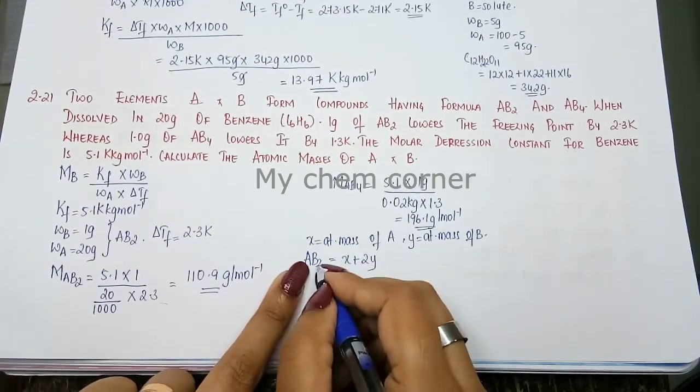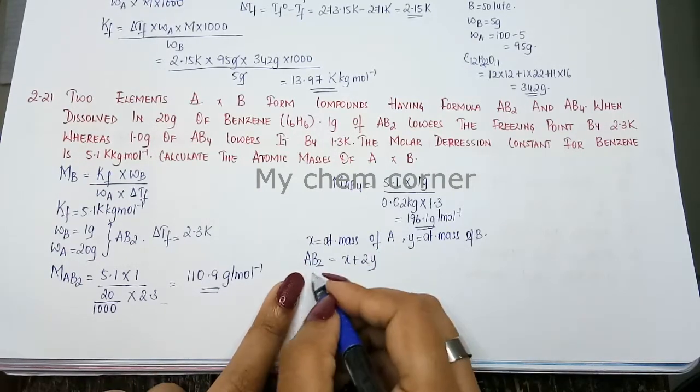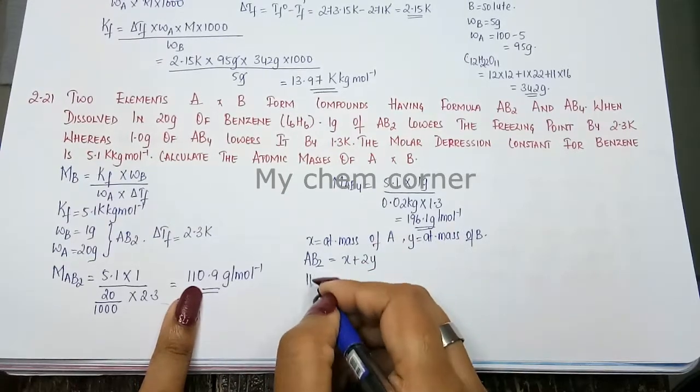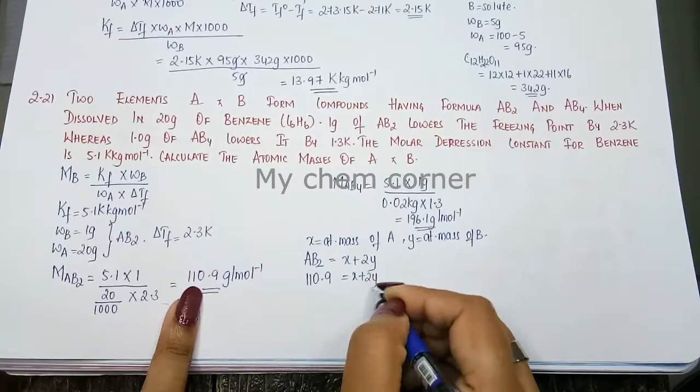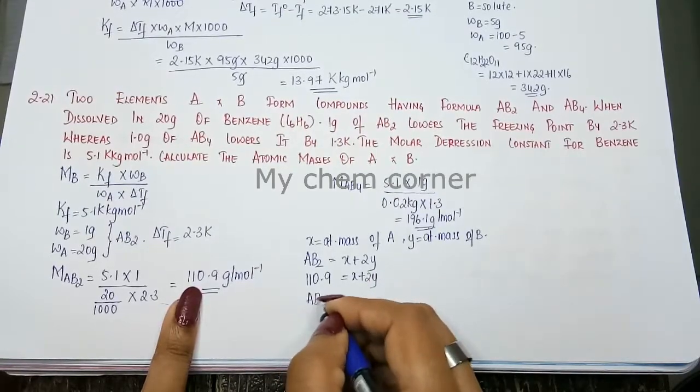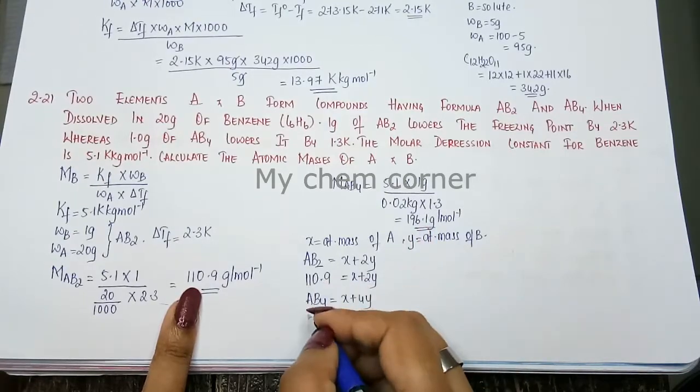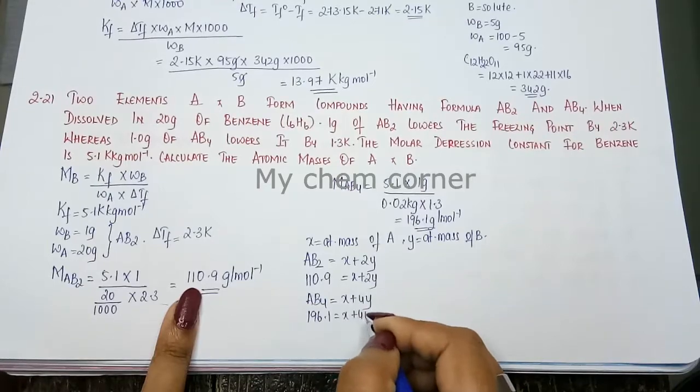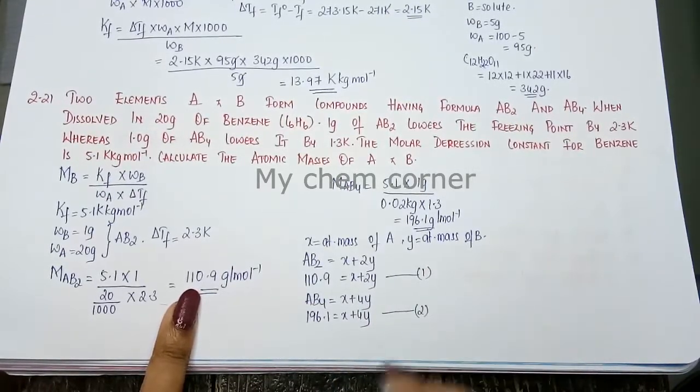Now for AB2 when I substitute it this is going to be X plus 2Y. A is for X, B is for Y. Since you have 2 you put 2Y here. What is the molar mass of AB2 that we found out? It is 110.9 equals X plus 2Y. Similarly if you are looking for AB4 this is going to be X plus 4Y. AB4 is going to be 196.1 which is equal to X plus 4Y. This is equation number 1 and this is equation number 2.